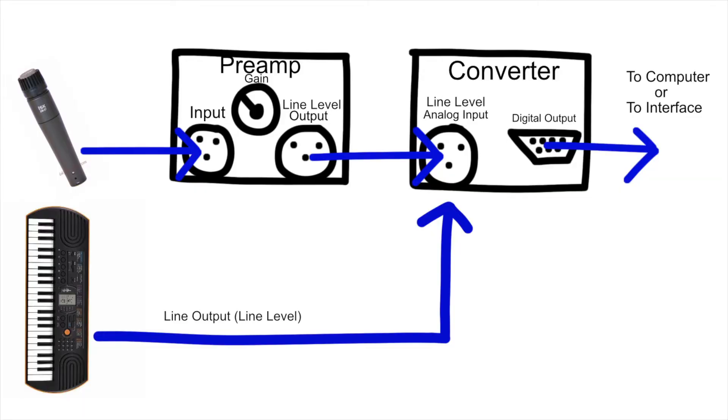If you use the line inputs of your audio interface, it'll bypass the preamps and your signal chain will look like this: it'll go straight from the line outputs of the source — in this case a keyboard — into the converter, and then it gets converted to digital and sent out to the computer. The converter is the final step in the analog audio chain, converting analog audio to digital audio.